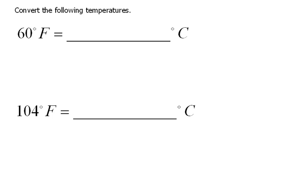Okay, let's practice now converting from Fahrenheit temperature into Celsius temperature. And in order to do that, we need our formula. The formula says that Celsius will equal 5 ninths times the Fahrenheit temperature minus 32.